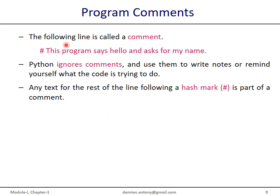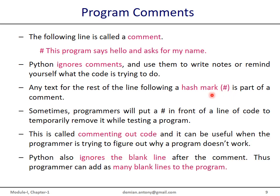Program comments. In Python, a comment starts with the special character hash mark, and Python ignores these comments. The programmer can use comments to write notes about the code; any text for the rest of the line following a hash mark is part of a comment. Sometimes programmers put the hash mark in front of a line of code to temporarily remove that line while testing — this is called commenting out code, and it is very useful to debug the program or figure out logical errors.